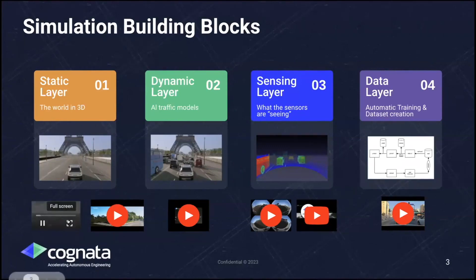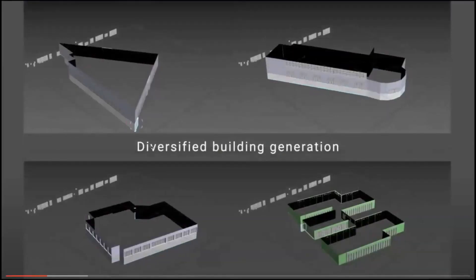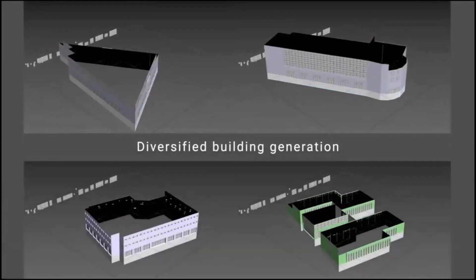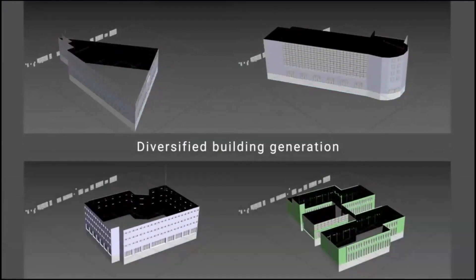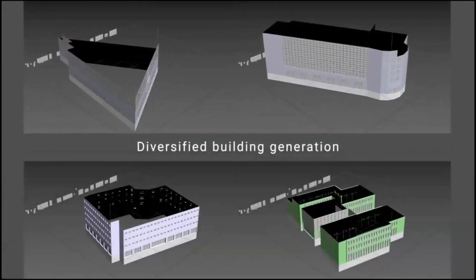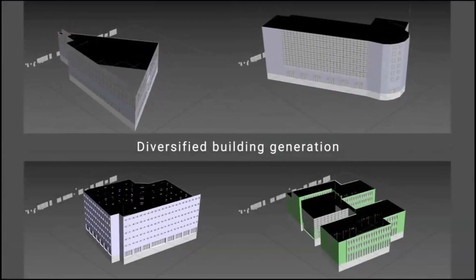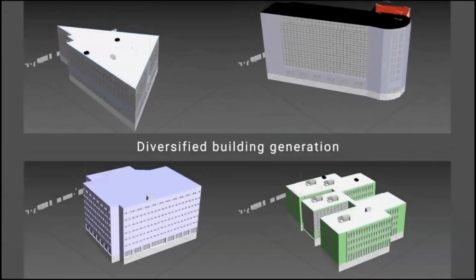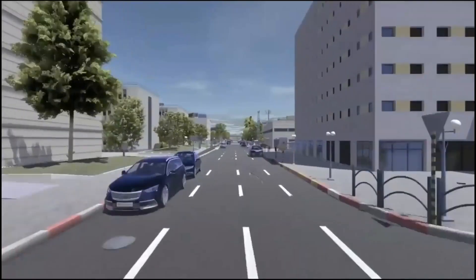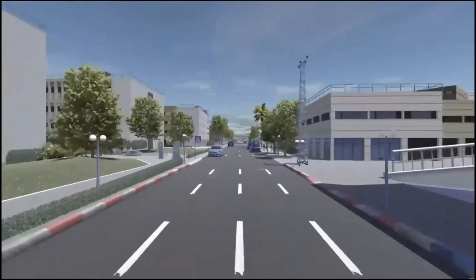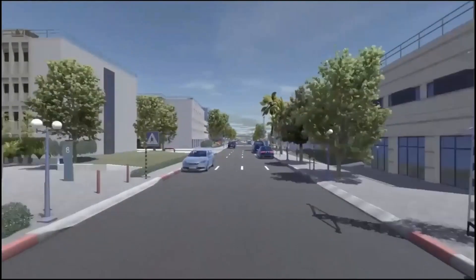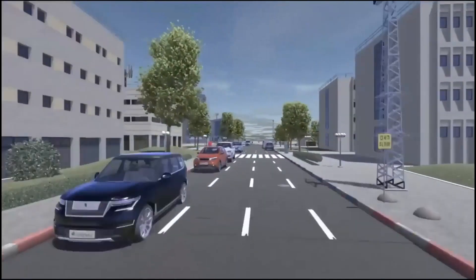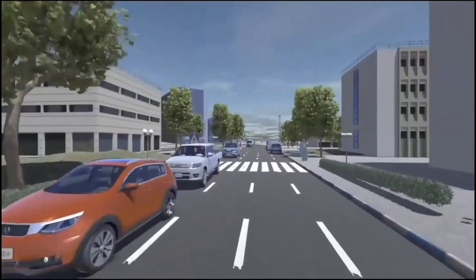On the static layer, we're building full worlds completely procedurally using layers coming from GIS layers for buildings, elevation maps for topography, and high-definition maps for navigation. The end result is fully furnished synthetic worlds created in our cloud in a few minutes.